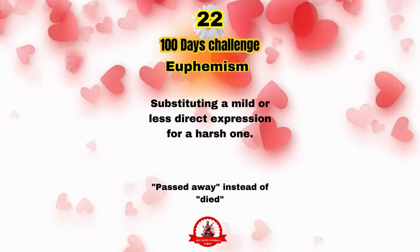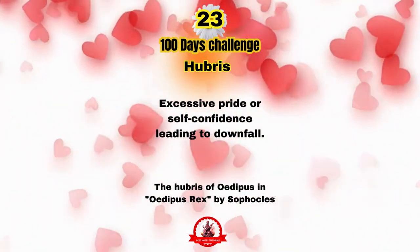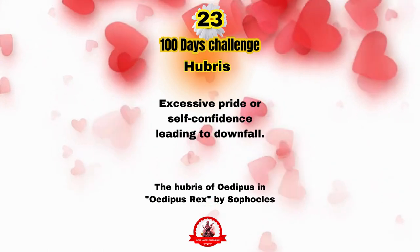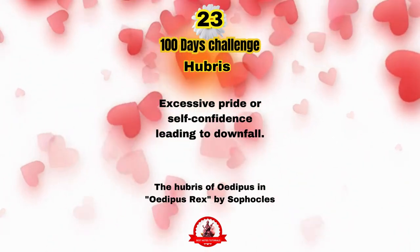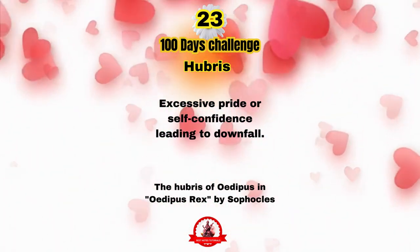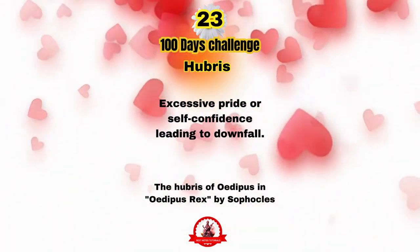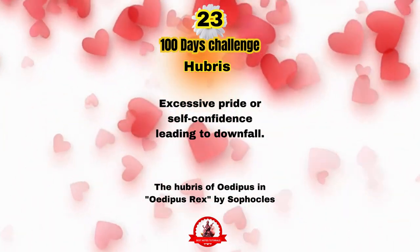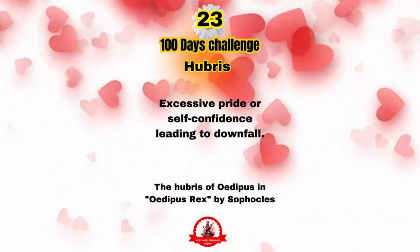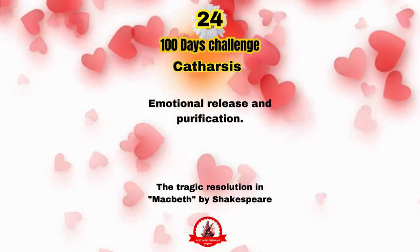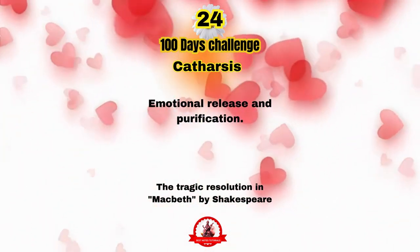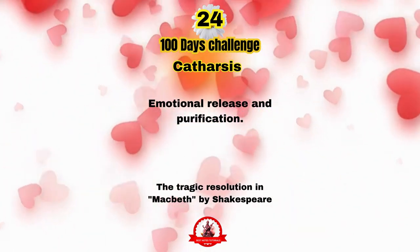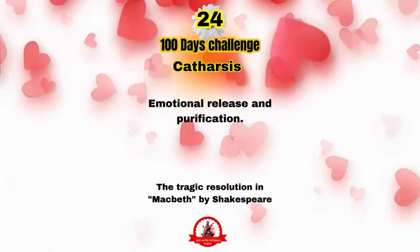Hubris — excessive pride or self-confidence leading to downfall, as seen in the hubris of Oedipus in Oedipus Rex by Sophocles. Catharsis — emotional release and purification, seen in the tragic resolution in Macbeth by Shakespeare.